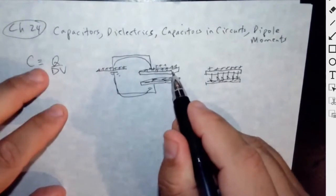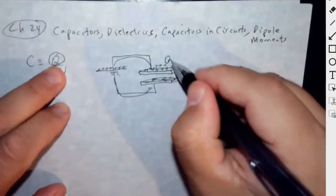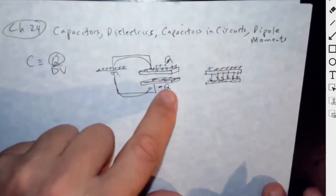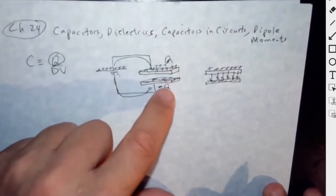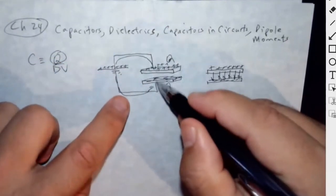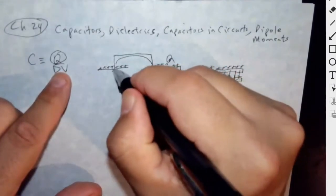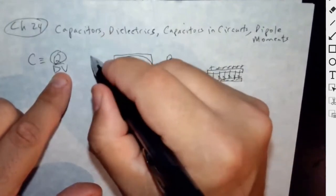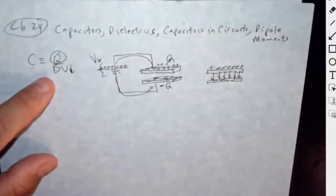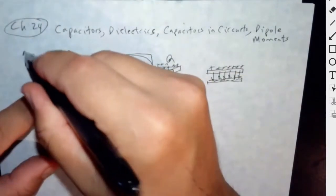The capacitance of that capacitor is a measure of how much charge it can store. This is the positive charge Q, and on the opposite side the capacitor stores negative Q. So capacitance is how much charge you can store divided by how much voltage difference is required to store that charge — the voltage difference created by the battery.